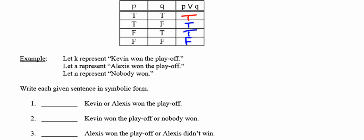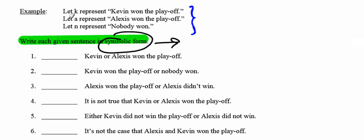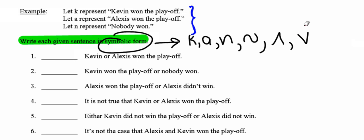In the example at the bottom of the page: let K represent 'Kevin won the playoff,' A represent 'Alexis won the playoff,' and N represent 'nobody won.' These can't have truth values assigned, so we only write them in symbolic form using K, A, N along with negation, conjunction, or disjunction symbols. Number 1: 'Kevin or Alexis won the playoff' is written as K V A.